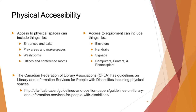When it comes to physical spaces, access can include things like entrances and exits, play areas and makerspaces, washrooms, offices and conference rooms. Access to equipment can include elevators, handrails, signage, computers, printers, and photocopiers. The Canadian Federation of Library Associations has guidelines on library and informational services for people with disabilities, including physical spaces, and a link to that has been provided.